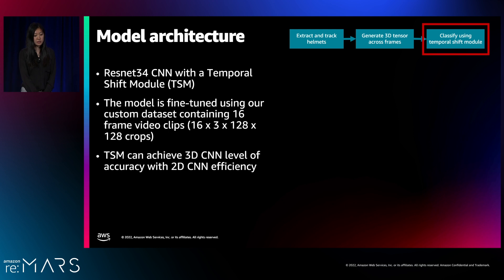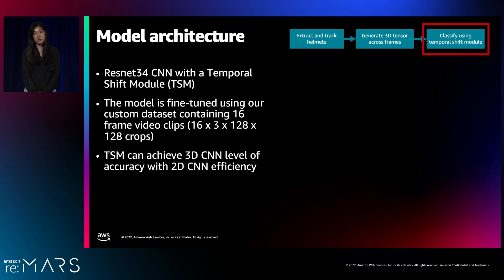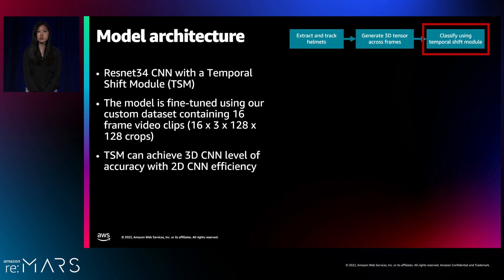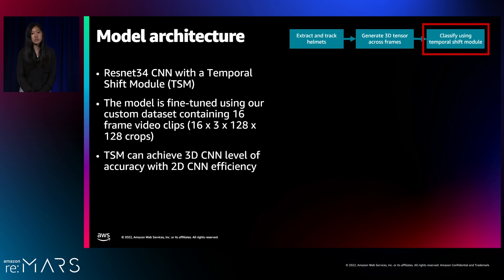The model is also fine-tuned using our custom dataset — the 16 × 3 × 128 × 128 crops — to make sure the model is tailored to our particular data. During training, we also did upsampling to deal with data imbalance, since impacts don't occur as frequently as non-impact moments. Hopefully that gives you a broad overview of what our impact detection model does.